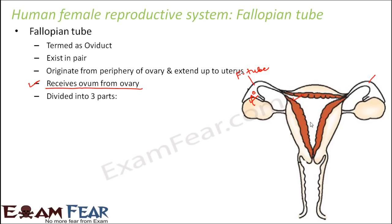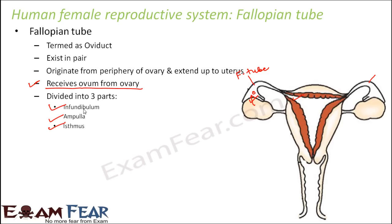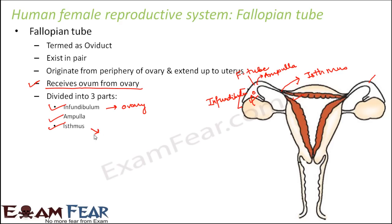The fallopian tube is divided into three regions: infundibulum, ampulla, and isthmus. The infundibulum refers to the broad conical-shaped structure very close to the ovary. After the infundibulum is the wide middle region called the ampulla. The isthmus is a very narrow region which directly opens into the uterus. So infundibulum is close to the ovary, isthmus is close to the uterus, and ampulla is the middle wide region.